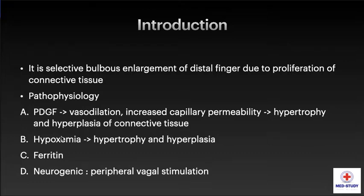Hypoxemia may also act as a triggering factor for hypertrophy and hyperplasia. Ferritin levels and neurogenic mechanisms, as seen with peripheral vagal stimulation, are also implicated.